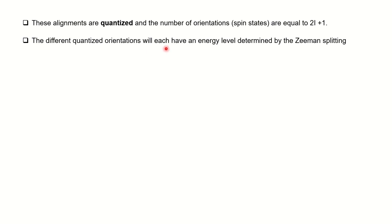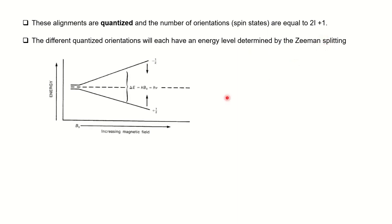The different quantized orientations will each have an energy level, which is determined by Zeeman splitting. You can see that for hydrogen, when you place the nucleus in the presence of an external magnetic field, it will start spinning and only two orientations are possible — aligned or opposed. Because of that, splitting occurs, which is called Zeeman splitting. This energy difference between the two orientations is directly proportional to the magnetic field strength. The stronger the applied magnetic field B₀, the greater is the energy difference between the possible spin states.